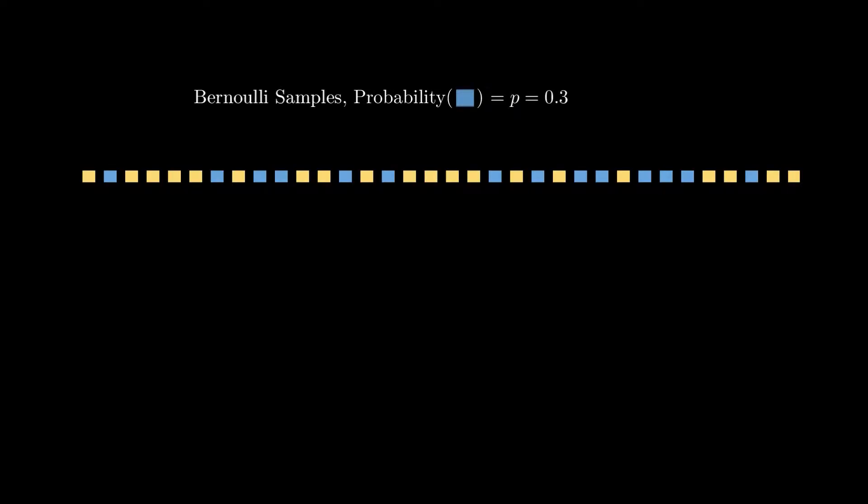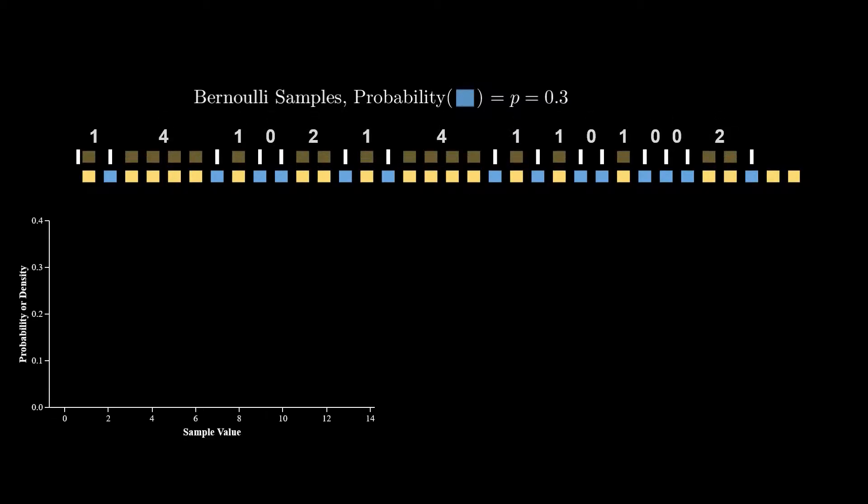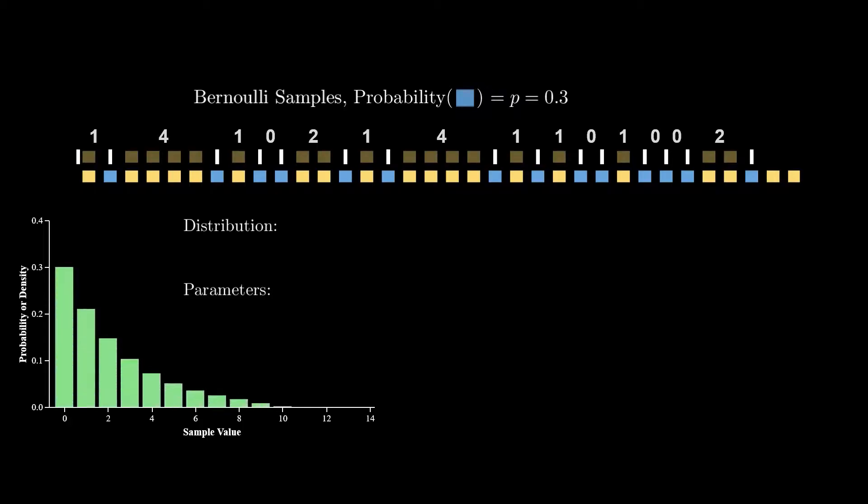We'll start with the simplest of random variables—the Bernoulli. One sample of this guy yields one of two outcomes, either yellow or blue. It has only one parameter, the probability of a blue box, which I'm writing here as p and I've chosen specifically to be 0.3. Now let's measure these boxes to produce another random variable. Specifically, let's draw lines above each blue box and count the yellow boxes between them. The punchline is this list of numbers would have a geometric distribution, and it carries the same parameterization as our Bernoulli, which is that number p. Not too bad so far.